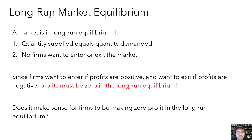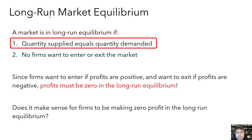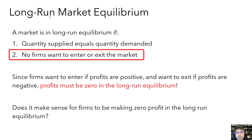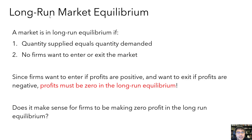We say that a market is in long-run equilibrium if: one, quantity supplied equals quantity demanded; and two, there aren't any more firms that want to enter or any firms that want to exit — meaning the number of firms in the market has stabilized. Since firms want to enter if profits are positive and exit if profits are negative, in the long run we can expect firms to be making zero economic profits.